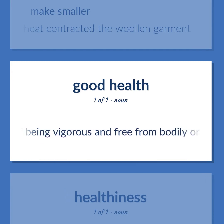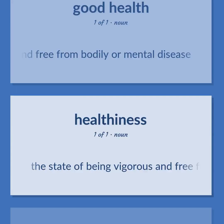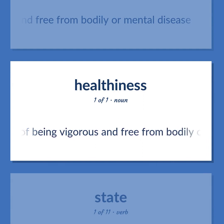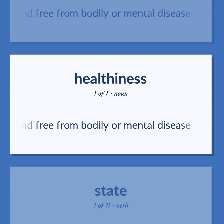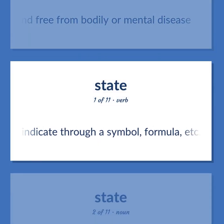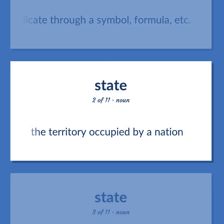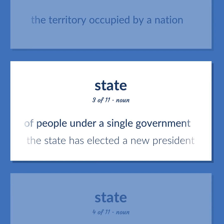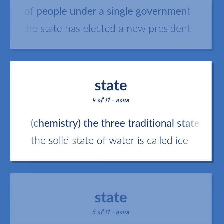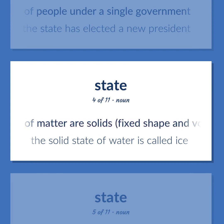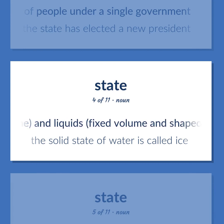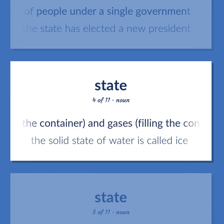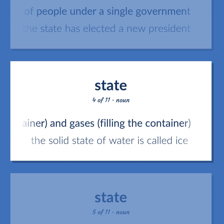State: the state of being vigorous and free from bodily or mental disease. Indicate through a symbol, formula, etc. The territory occupied by a nation. A politically organized body of people under a single government — 'The state has elected a new president.' Chemistry: the three traditional states of matter are solids (fixed shape and volume), liquids (fixed volume and shaped by the container), and gases (filling the container) — 'The solid state of water is called ice.'